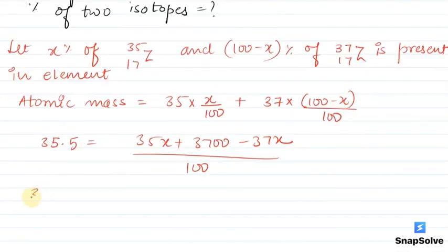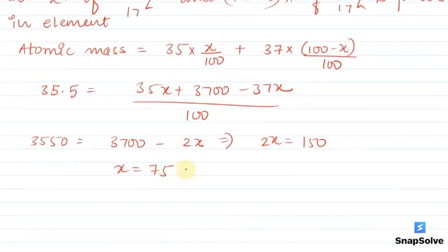Simplifying this, 3550 equals 3700 minus 2x, so 2x equals 150, therefore x value is 75. This means 35-17-Z isotope is present as 75 percent and 37-17-Z isotope is present as 25 percent.